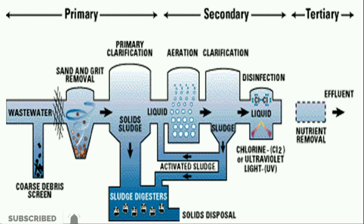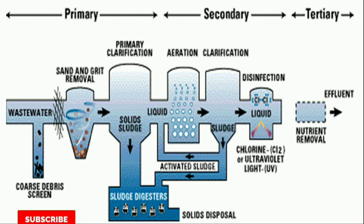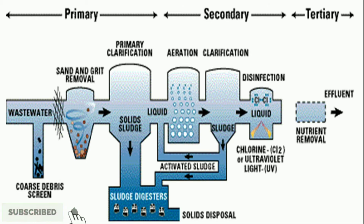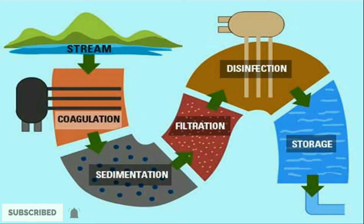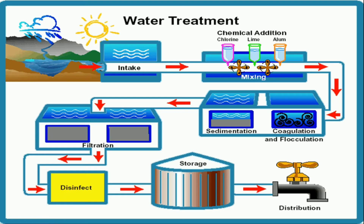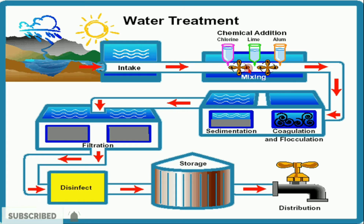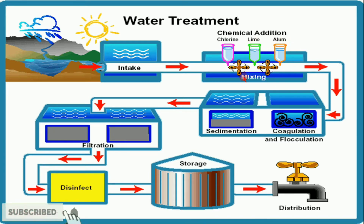This is the screening process — the first primary process. Next, we send some gases in to remove carbon dioxide and H₂S gases from the water. This step is aeration.